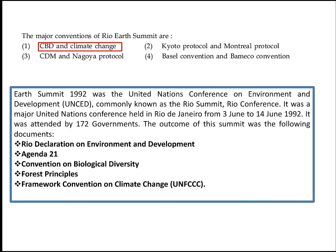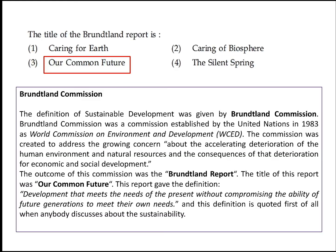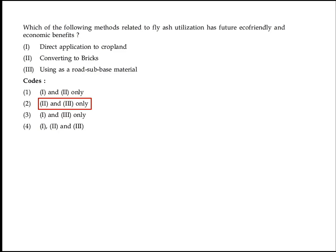The major conventions of the Rio Earth Summit are CBD and Climate Change. Option 1 is the right answer. The title of the Brundtland Report is 'Our Common Future.' Option 3 is the right answer. Which of the following methods related to fly ash utilization has the most eco-friendly and economic benefit? Converting to bricks and using as a road sub-base material. Option 2 — 2 and 3 only — is the right answer.